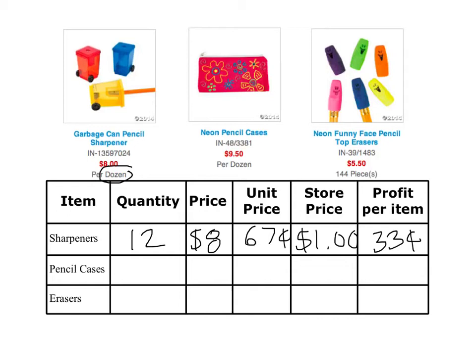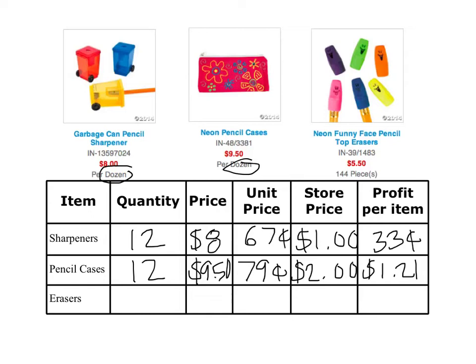Pencil cases are a dozen again, so that's 12, and I get them for $9.50. When I divide 9.50 by 12, it costs about 79 cents each — I got 0.7916 repeating, so we just round to the nearest penny. Then I need to decide how much I could sell these for. This is kind of a big thing, so I think these are a pretty good deal at 79 cents. I think I could sell these for $2, and that gives me a pretty big profit of $1.21 each.